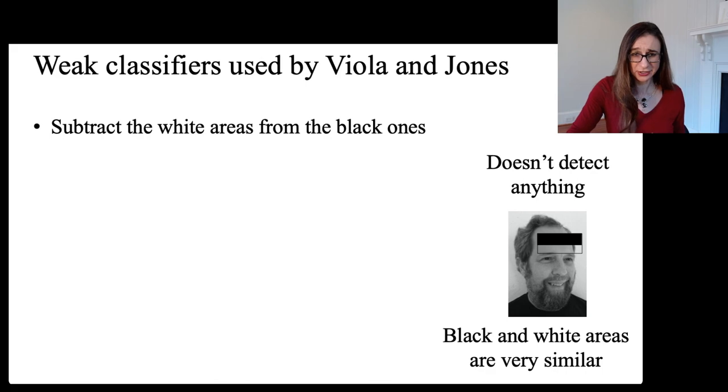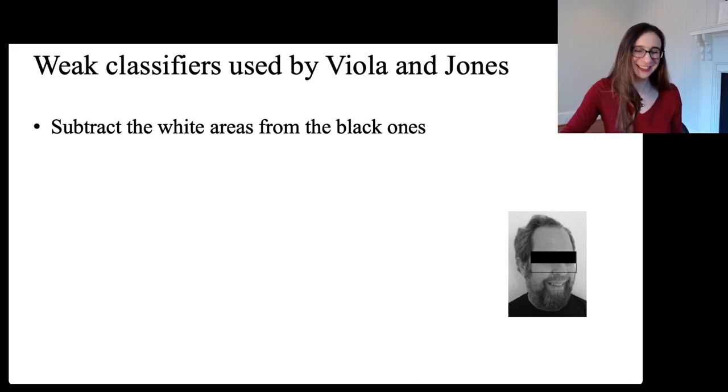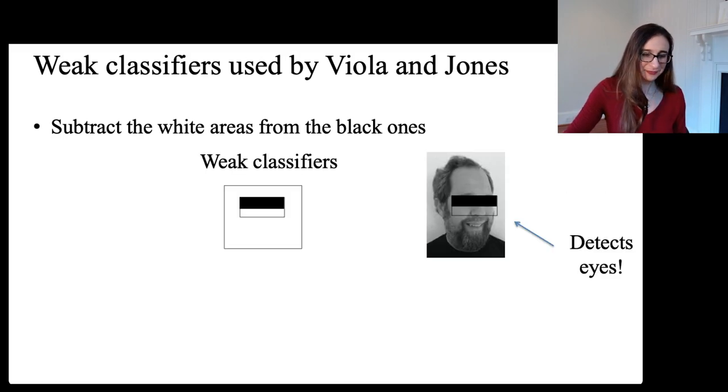Here, they're both dark. And so again, the difference between the black area and the white area is zero. But here, this is where we are detecting something, because you can see where his eyes were. Where this is all dark and then just below his eyes is lighter. And so that's our weak classifier for detecting his eyes. So now there's the detection.